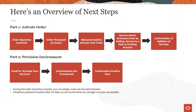Part one is order activation. Order activation is initiated once your order is signed and processed by Oracle. You're then guided to add your new service to your new or existing Oracle Cloud account. Once the order is processed by Oracle, you will get a welcome email to respond to in order to activate your order. A service administrator will activate your order by adding services to a new or existing account, and you'll receive a confirmation of addition of services.